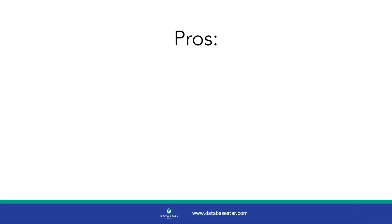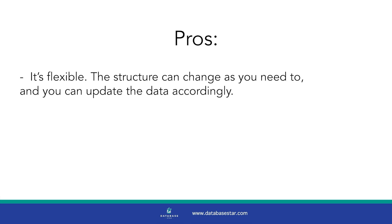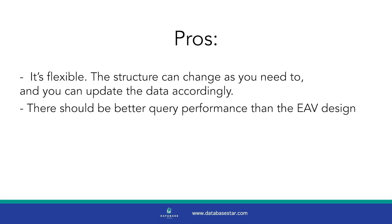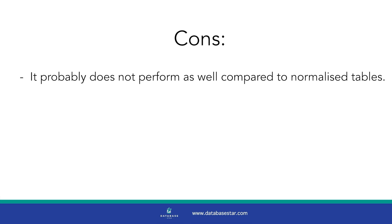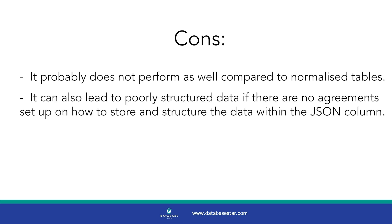There are a few benefits to this approach. First, it's flexible — the structure can change as you need to, and you can update the data accordingly. There should also be better query performance than the EAV design, and it should be easier to query. There are a couple of drawbacks: it probably does not perform as well compared to normalised tables, and it can lead to poorly structured data if there are no agreements set up on how to store and structure the data within the JSON column.